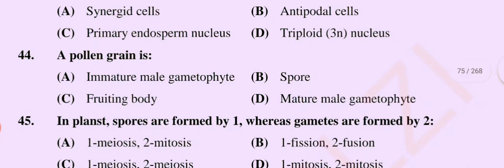Question number 44: A pollen grain is — option A immature male gametophyte, option B spore, option C fruiting body, option D mature male gametophyte. The correct option is option A: immature male gametophyte.